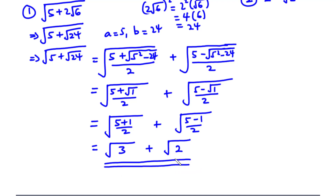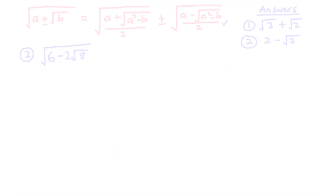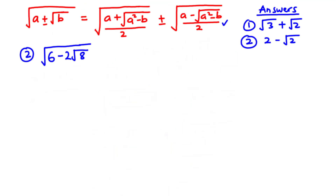Now you understand why, when using the trick, we are asked to put root 2 on the right-hand side — so that when the operation sign is subtraction instead of addition, you don't end up with a different answer. Let's move ahead and solve the second question: 6 minus 2 root 8 inside the bigger square root.